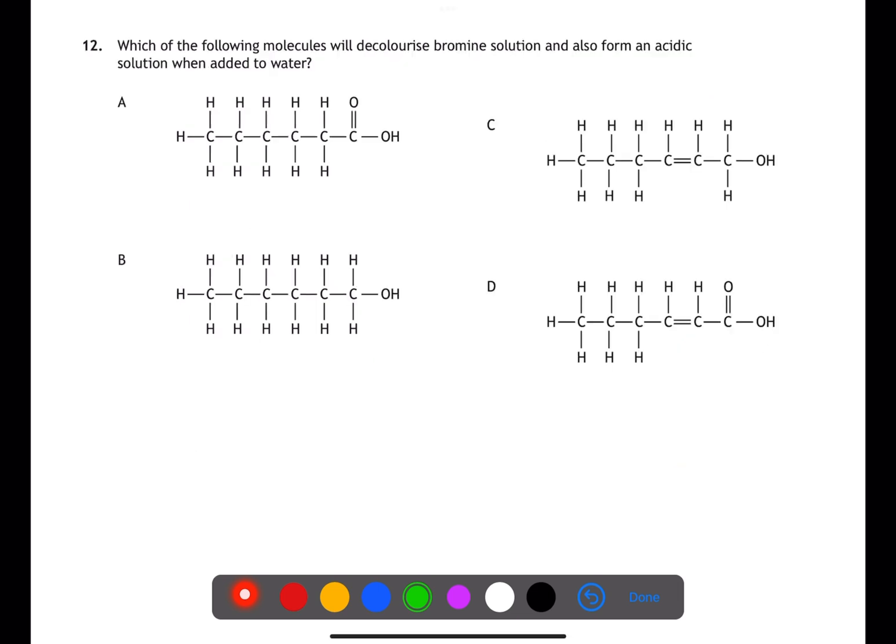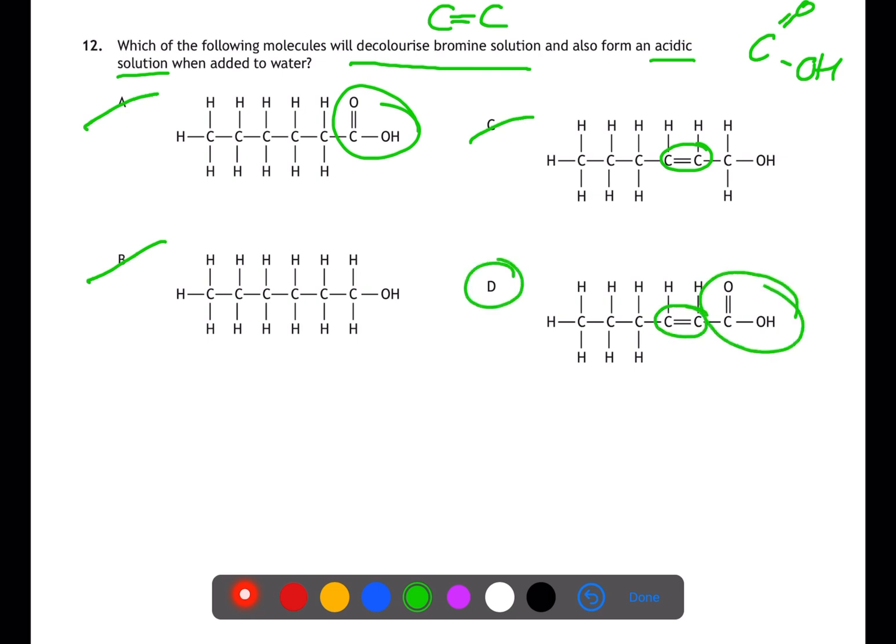Question 12 is testing your knowledge of different reactions. Decolorization of bromine solution means there must be a carbon-to-carbon double bond. Forming an acidic solution when added to water means there needs to be a carboxyl group: C double bond O, O-H. A contains a carboxyl group but no carbon-to-carbon double bond. B contains neither. C contains a carbon-to-carbon double bond but no carboxyl, whereas D has both.